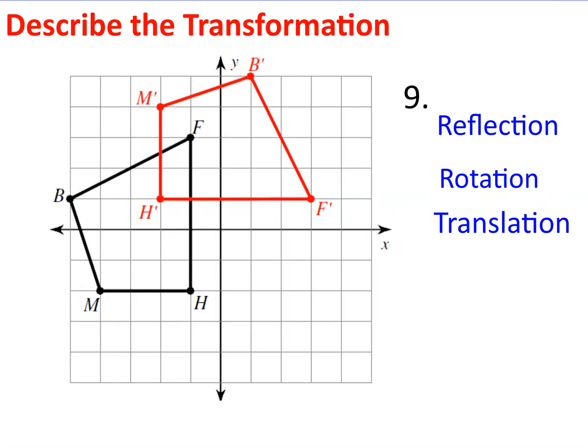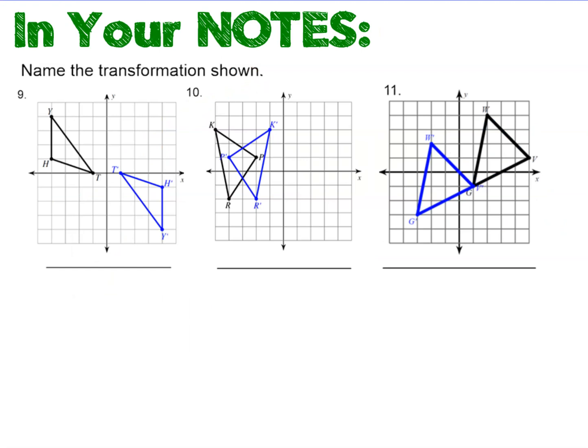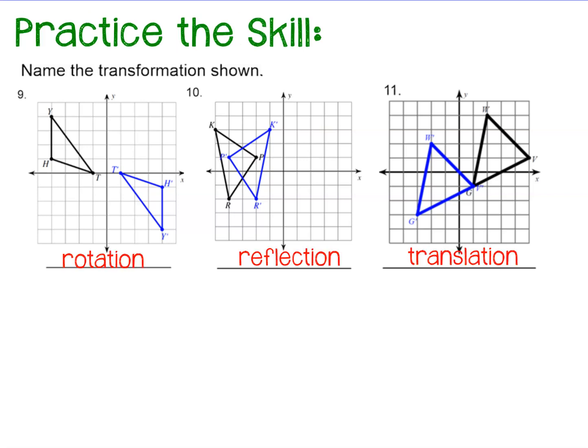This one is a translation. Last one, what do you think? Corresponding parts - I have a crossover already, that's a rotation. You saw these three, let's see if you can name them real quick. Rotation, reflection, translation. That concludes our lesson on the three rigid motions.